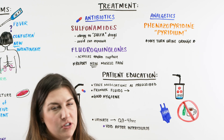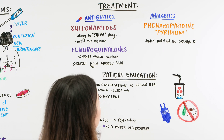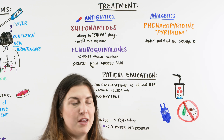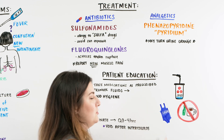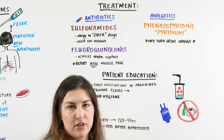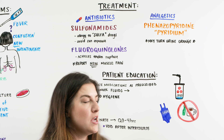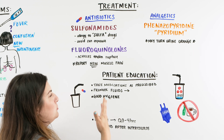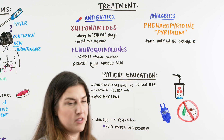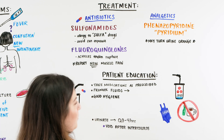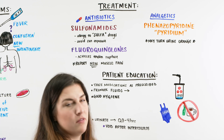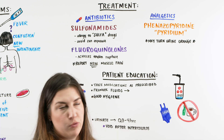We can also give analgesics. One of the most common is phenazopyridine, also known as pyridium. This medication turns the urine orange. If a patient has never taken it before, we need to make sure they know their urine is going to turn orange — it should be orange for a couple of days and then it should go away. We want them to be aware so it doesn't scare them, and so they can notify their PCP if there's any change in their urine.